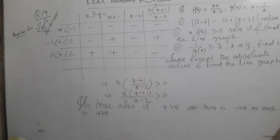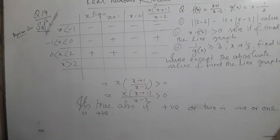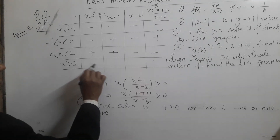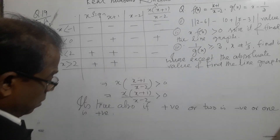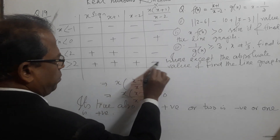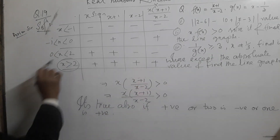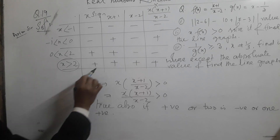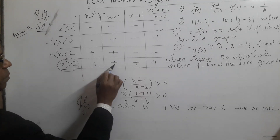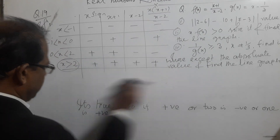When x is greater than 2, all three factors are positive: plus, plus, and plus. Because x is greater than 2, then all signs are positive. The product is positive. This gives us the solution region from the line graph.